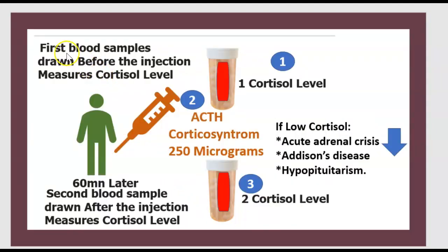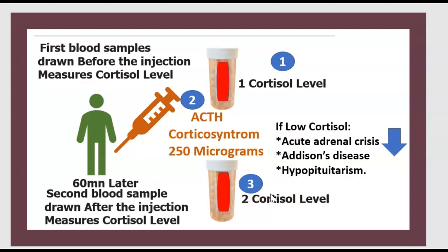Reminder of the technique: we take two blood samples — the first before the injection, the second after. We determine the cortisol level for each sample. Between both samples, we give an injection of cosyntropin 250 micrograms, and 60 minutes later we measure the cortisol level in the second sample. If cortisol is low, that indicates acute adrenal crisis, Addison disease, or hypopituitarism.